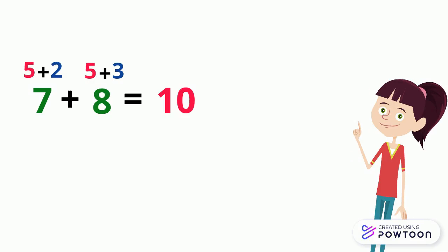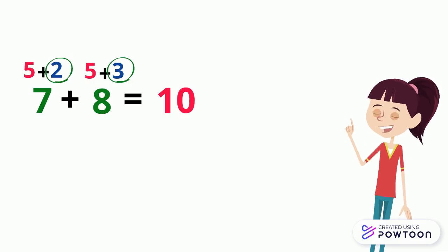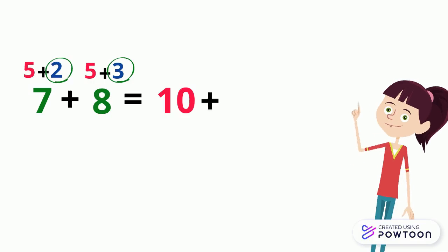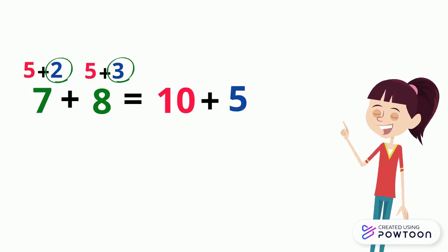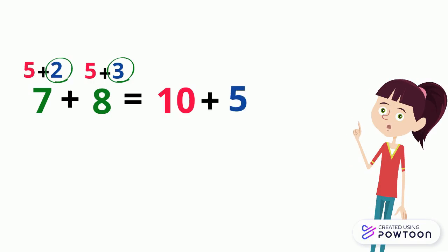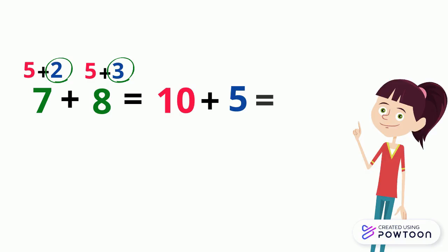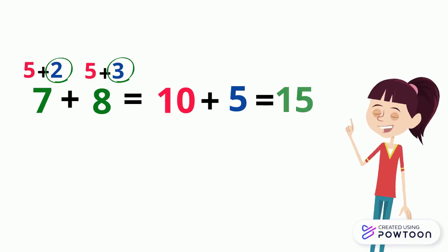Now we will add 2 and 3. 2 plus 3 equals 5. So 7 plus 8 equals 10 plus 5 equals 15.